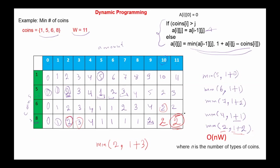To trace back and find which coins are used: in the last cell the value 2 is the same as the cell above, so we move up. The value came from the row for coin 6, so coin 6 is included. The remaining amount is 11 minus 6 = 5. Going to column 5 in the row above, that value came from coin 5, so coin 5 is included. Remaining amount is 5 minus 5 = 0, so we are done. The coins are 6 and 5. The complexity of this algorithm is O(N·W), where N is the number of coin types and W is the amount.